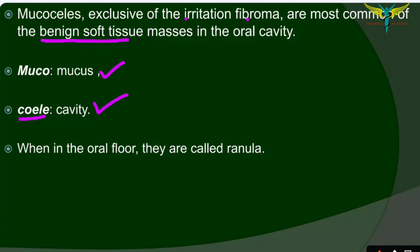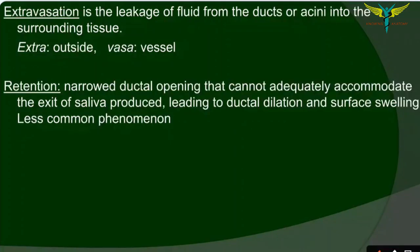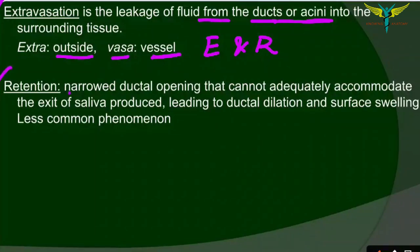When mucoceles are present in the floor of the oral cavity, they are called ranula. When mucus is extravasated — that means leakage of fluid from the ducts of acini into the surrounding tissue — 'extra' meaning outside and 'vasa' meaning vessel. In cases of retention, there is a narrow ductal opening that cannot adequately accommodate the exit of saliva produced, leading to ductal dilatation and surface swelling. Retention is a less common phenomenon than extravasation.